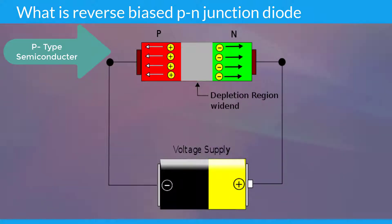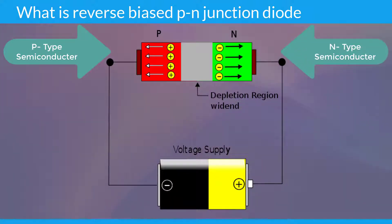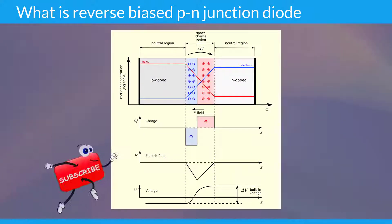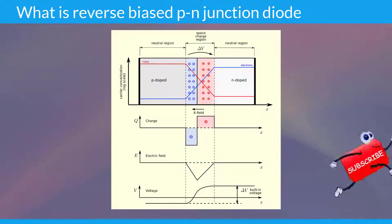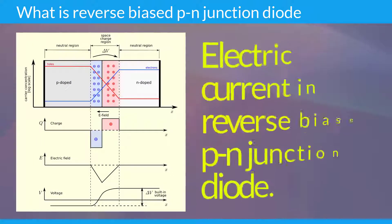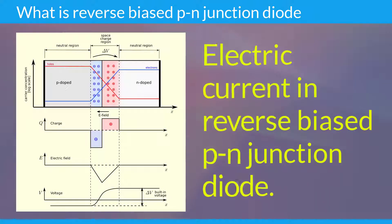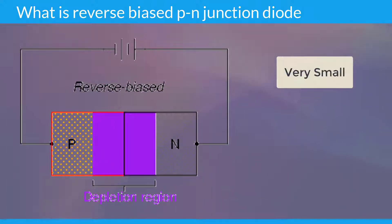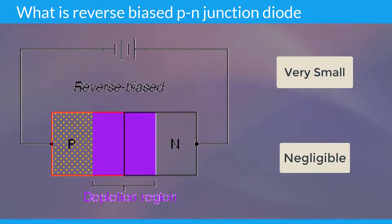In the similar way, the negative terminal of the battery pushes the free electrons, that is minority carriers, towards the N type semiconductor. The positive charge carriers, that are holes, which cross the PN junction are attracted towards the negative terminal of the battery. The negative charge carriers, that is free electrons, which cross the PN junction are attracted towards the positive terminal of the battery. Thus, the minority charge carriers carry the electric current in reverse biased PN junction diode. The electric current carried by the minority charge carriers is very small; hence, minority carrier current is considered as negligible.